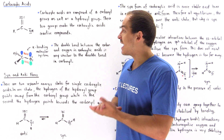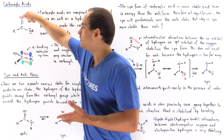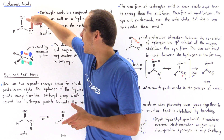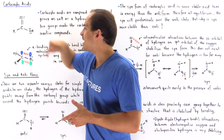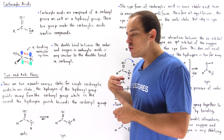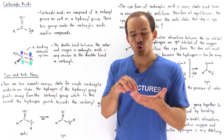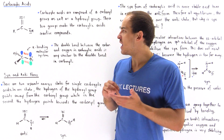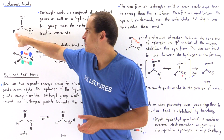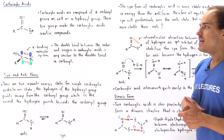Carboxylic acids have a general form that looks something like this. We have a carbon-oxygen double bond — the carbonyl group — and a carbon-oxygen single bond with an H attached to our oxygen, which is the hydroxyl group. So within the carboxylic acid, we have two types of groups: the carbonyl group and the hydroxyl group. We also have some type of group or atom attached to our carbon, which can be an H atom or some other type of hydrocarbon.